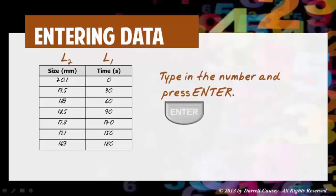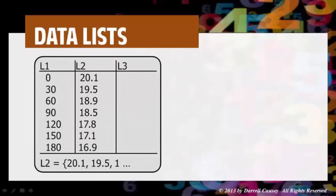Type in the number and press enter. So put in 0, press enter. Put in 30, press enter, etc. Then move over to L sub 2 and put all those numbers in. Once you have those in, you should have a data list that looks something like this. And each of those represent coordinate points.